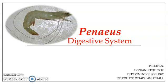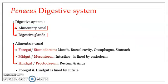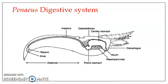Hi everyone. In this presentation we will be looking in detail at the Penaeus digestive system. Penaeus is a common prawn. The digestive system is composed of two parts: the alimentary canal and the digestive glands.